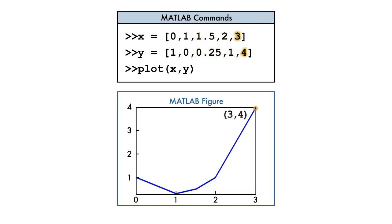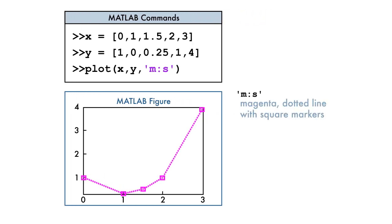We can add markers to the points by using a third input to the plot function. The third input contains characters surrounded by single quotation marks that specify the format of the graph. In this particular example, the line will be a magenta dotted line with square markers.